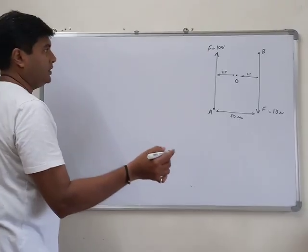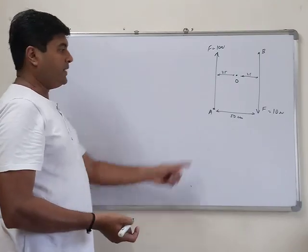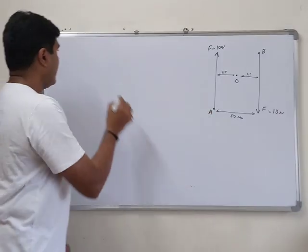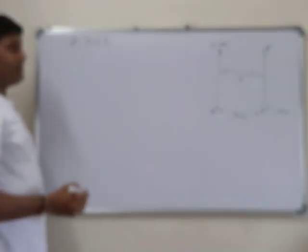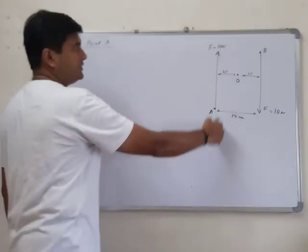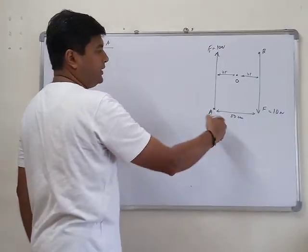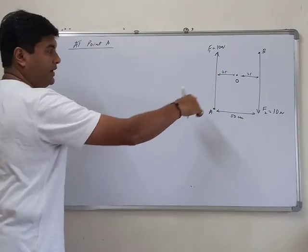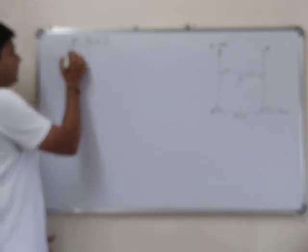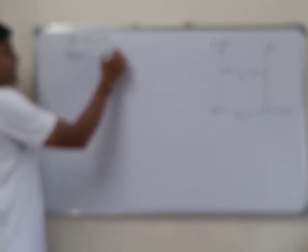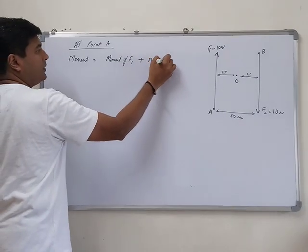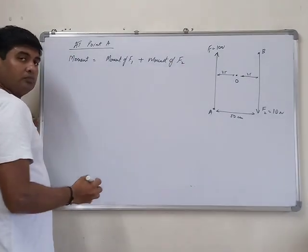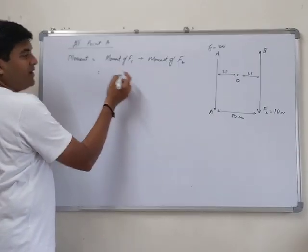Taking point A first — the forces are 10 N each. At point A, there are two forces: F1 and F2, both acting at this particular point. The total moment equals the moment of F1 plus the moment of F2.